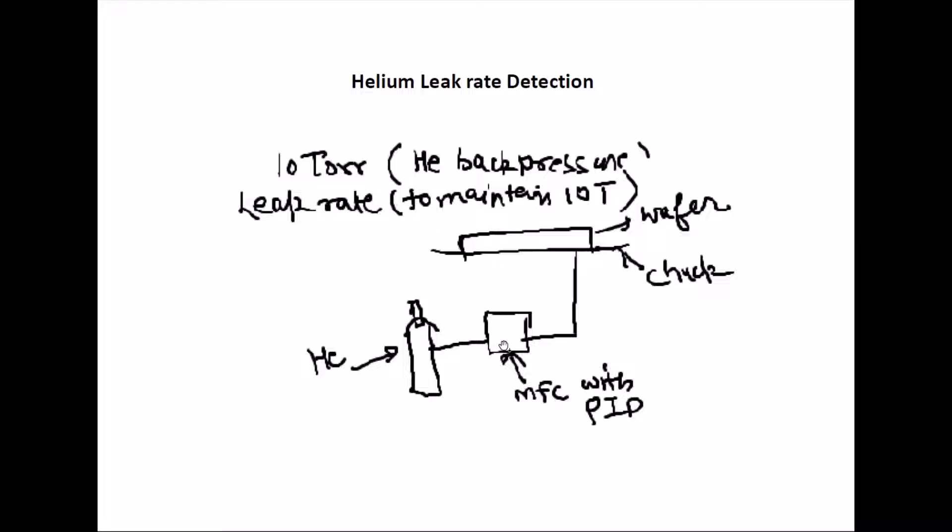So the mass flow controller decides how much gas you have to flow to make it one Torr. Now, let's suppose you don't have a leak. That means the mass flow controller will have the same amount open for the initial reading. There's no leak, so the mass flow controller does not have to do any work after the initial one Torr pressure, right? So it does not have to do any work.